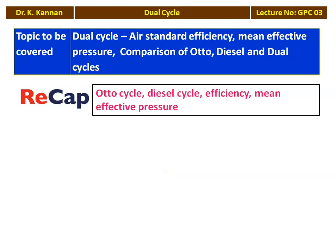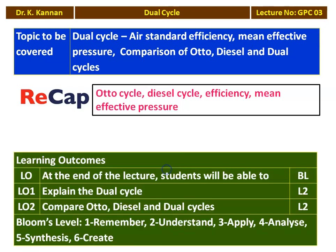In the previous two lectures, we studied the Otto cycle and diesel cycle, and derived the efficiency and mean effective pressure of both. The learning outcome for this lecture: at the end, students will be able to explain the dual cycle — at Bloom's level 2, understanding — and compare Otto, diesel, and dual cycles with respect to certain common parameters, also at Bloom's level 2.